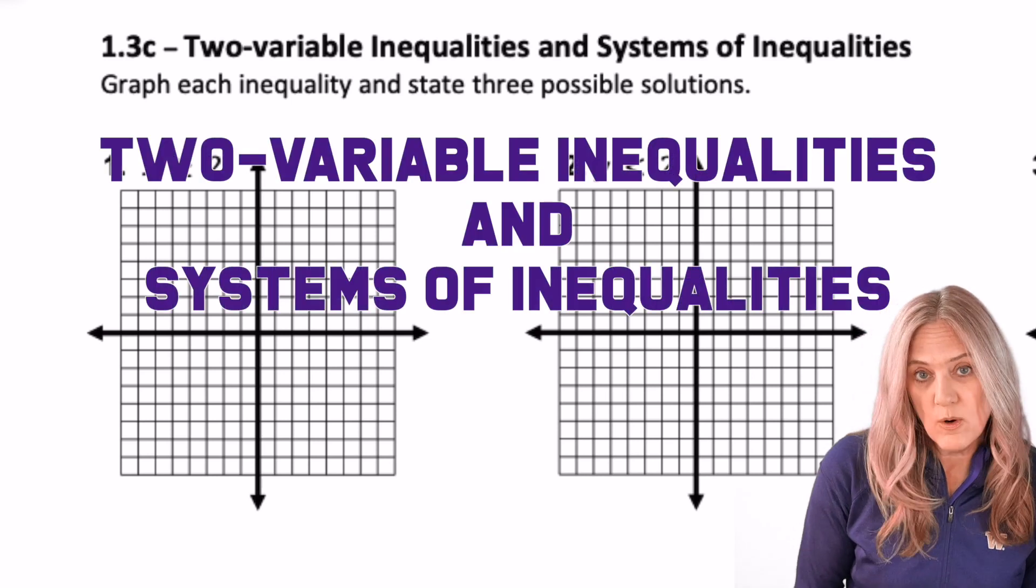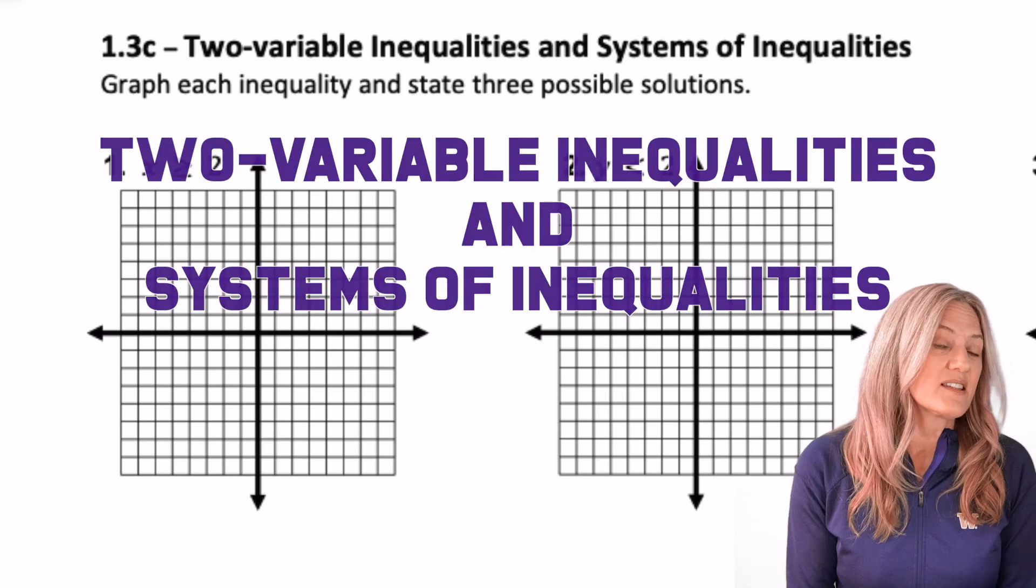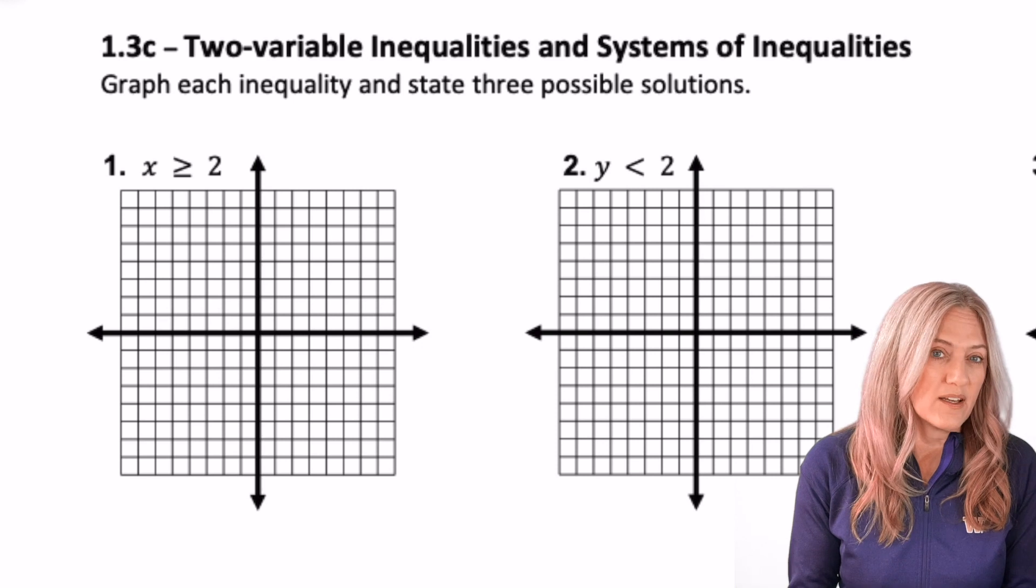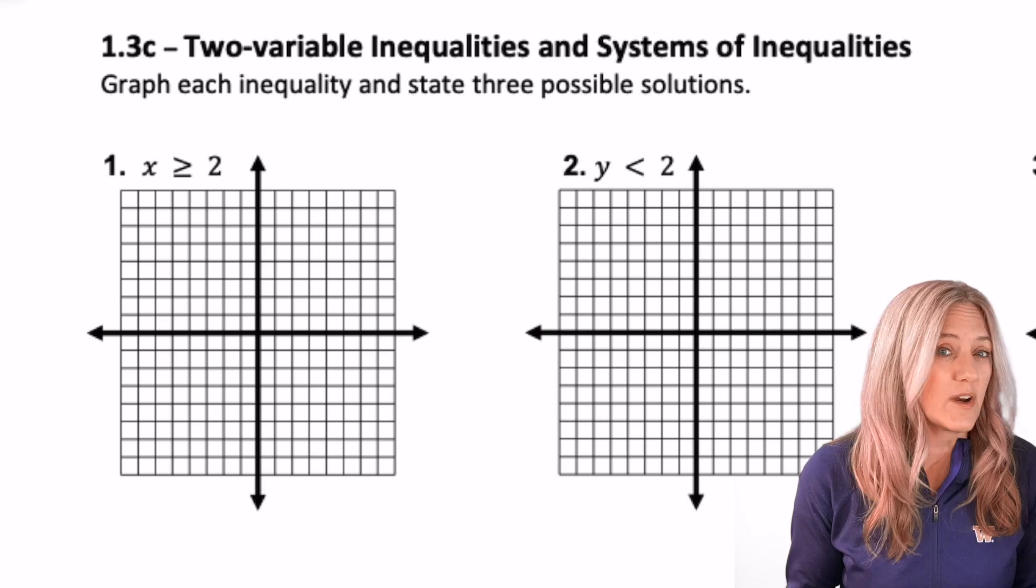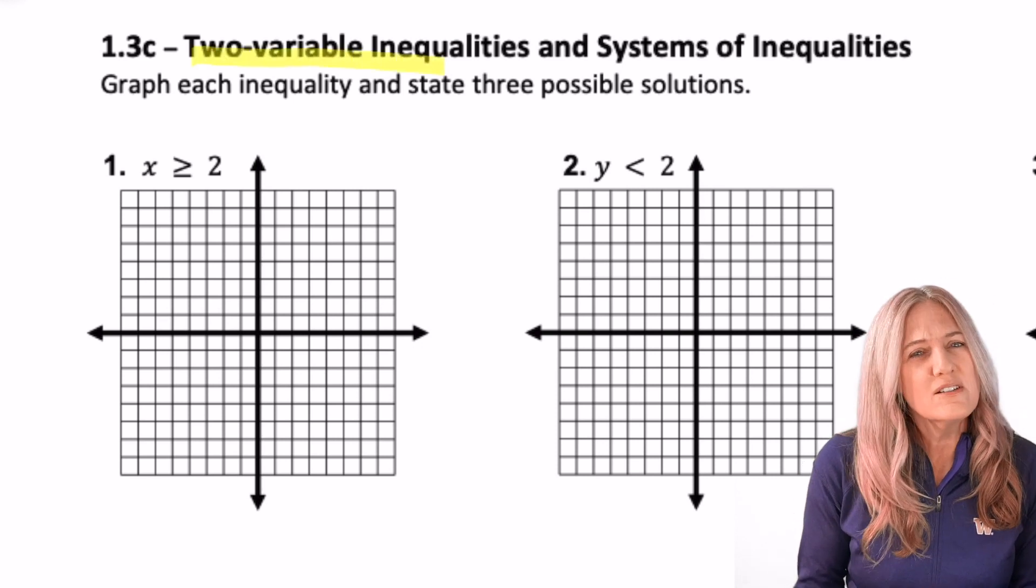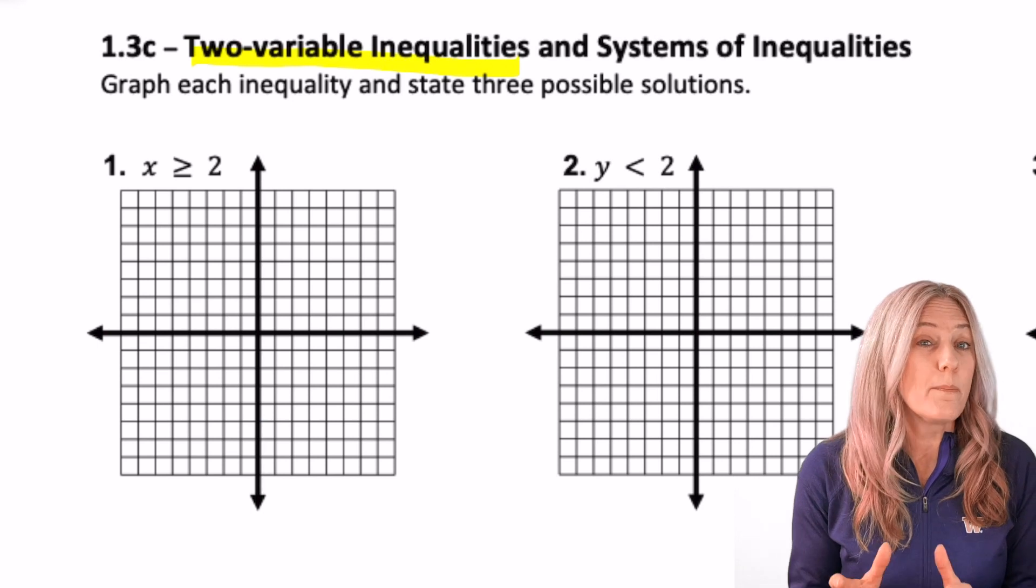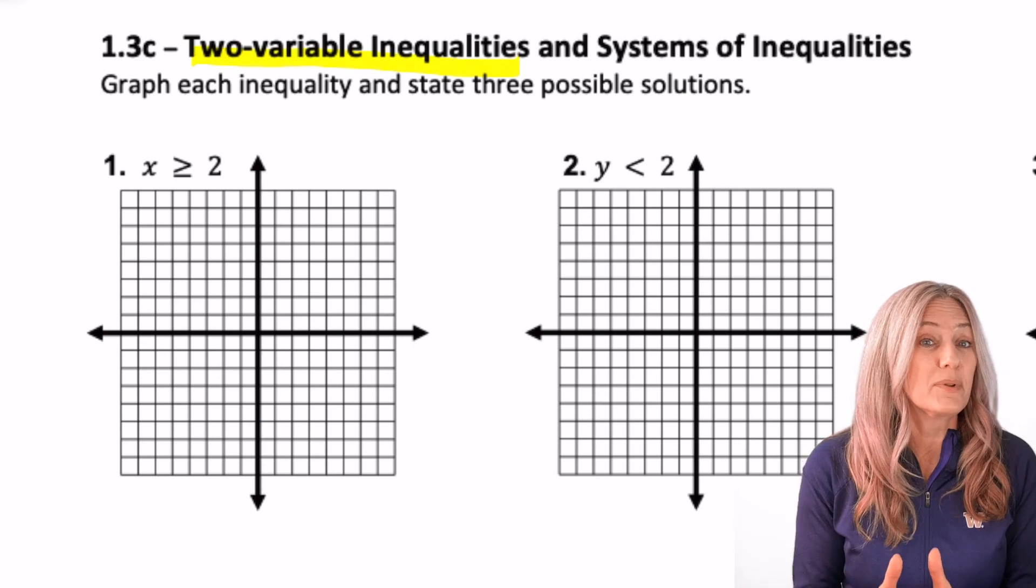When solving a one variable inequality, the solution set is the set of points on a number line. When solving a two variable inequality, our solution set happens to be the ordered pairs on a coordinate plane.